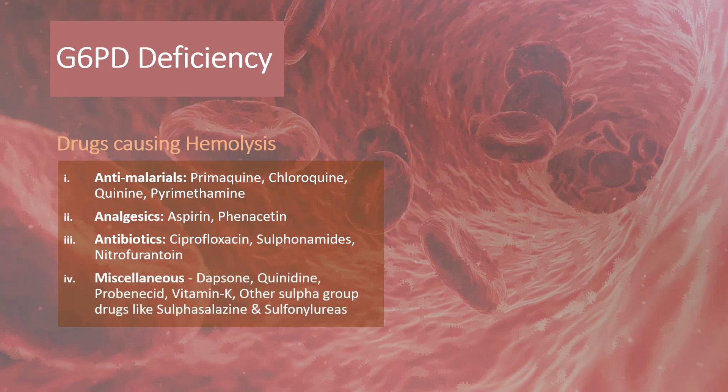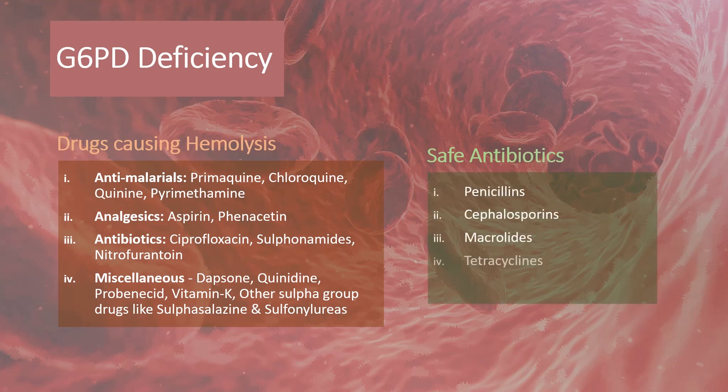Other implicated drugs include dapsone, quinidine, probenecid, vitamin K, and sulfa group drugs like sulfasalazine and sulfonylureas. On the other hand, antibiotics considered safe in G6PD deficiency include penicillins, cephalosporins, macrolides, tetracyclines, and trimethoprim.